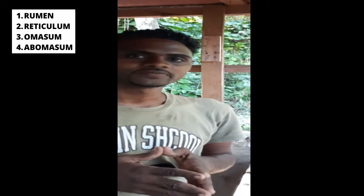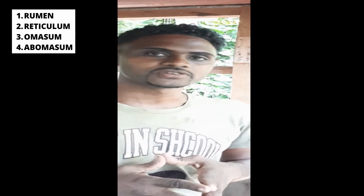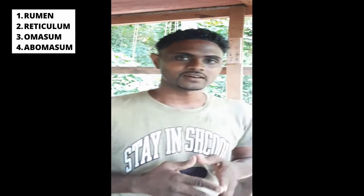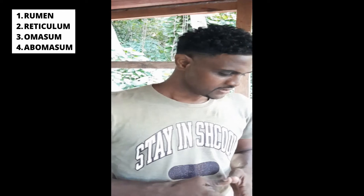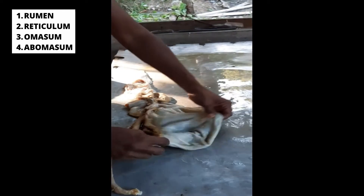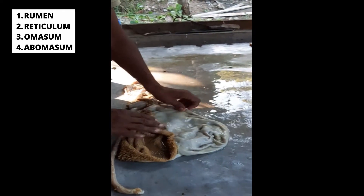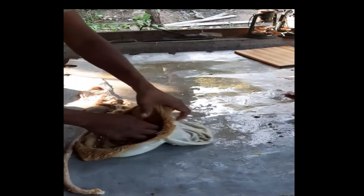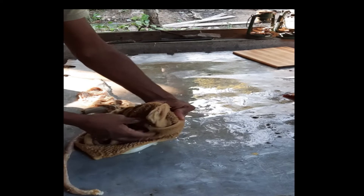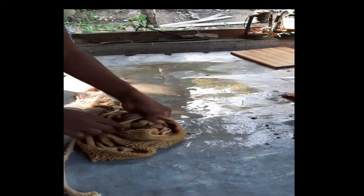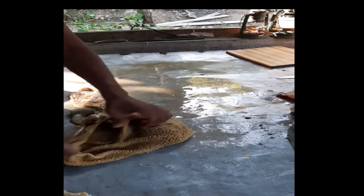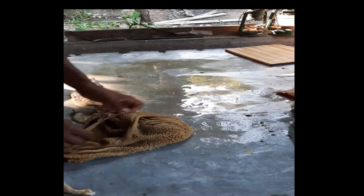Alright guys, I opened up the stomach of the goat, which is a rumen and stomach. I'm going to show you inside of each compartment. So this is the rumen, which we said is the largest part, and this is the inside of the rumen.